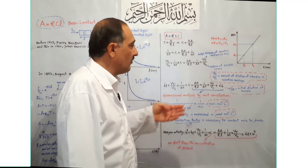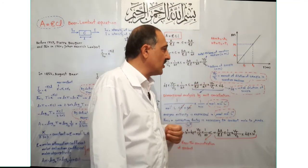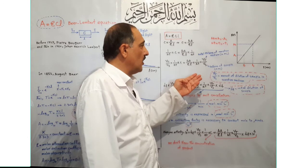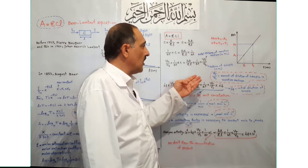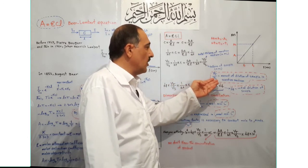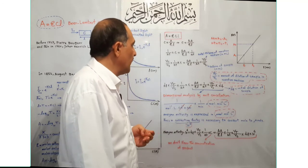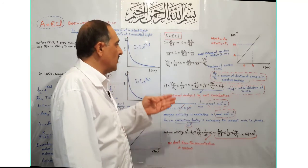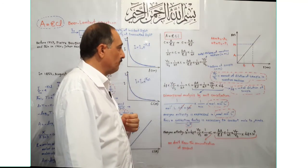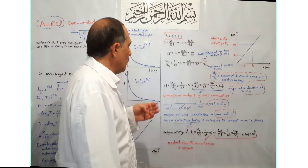The amount of dilution of the sample in the reaction medium — that is, the ratio of the total volume of the reaction medium (Vt) to the sample volume (Vs) — should also be included in this equation.